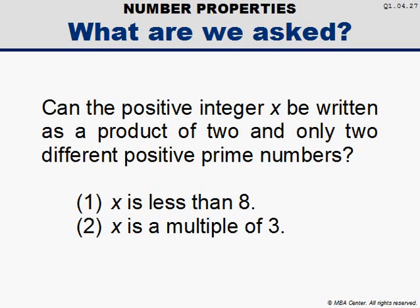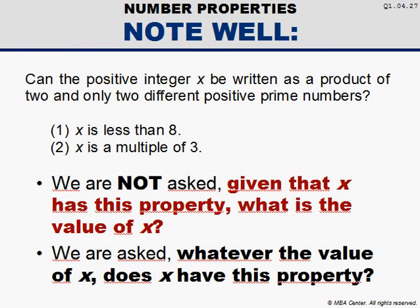However, equally important is a good grasp of the semantics and a thorough understanding of the assignment, especially on a data sufficiency question. Here, the problem asks us whether integer x could be written as the product of two and only two different positive prime numbers, say for example 3 times 5 or 2 times 7. Now, pay close attention. This question does not give us this information as a property of x from whence we are to find its value. The question asks us whether, given that x has such and such a value, will that number have this property that's mentioned.